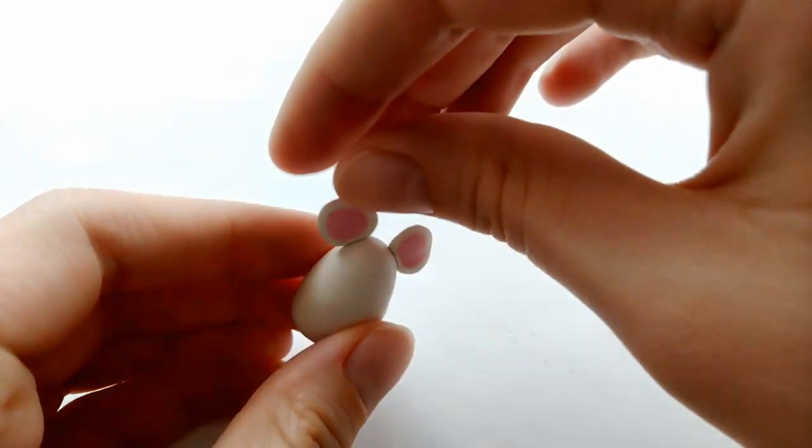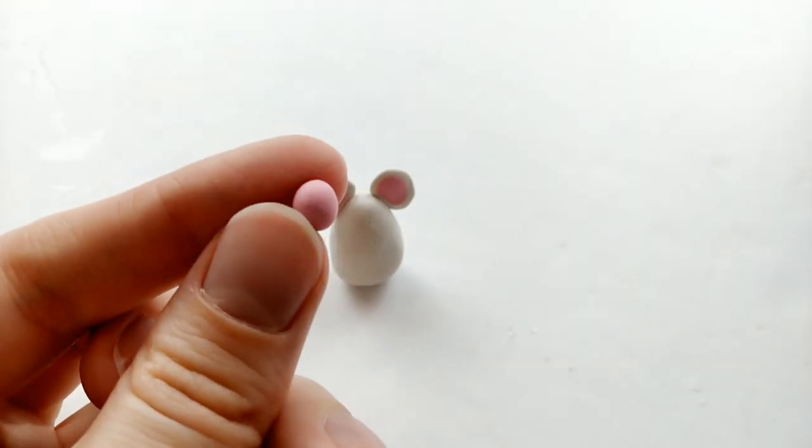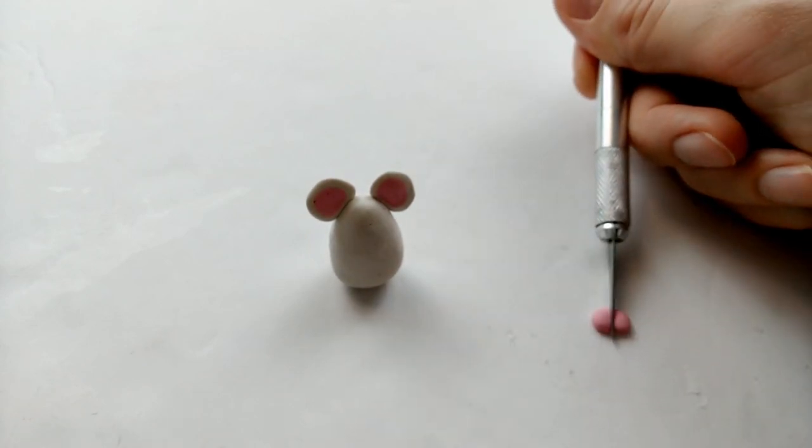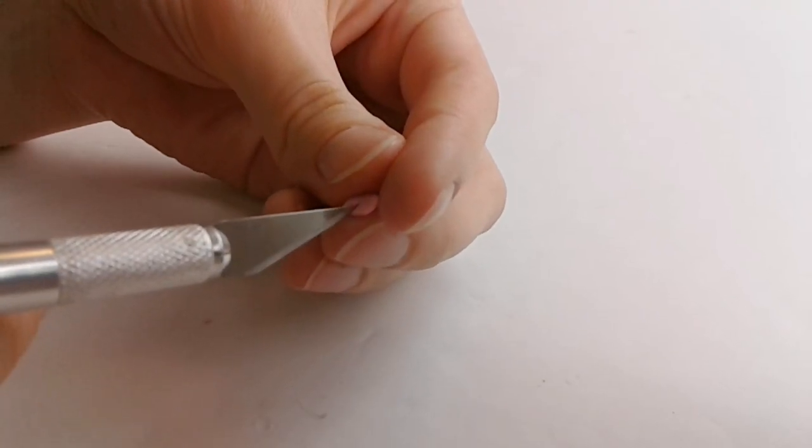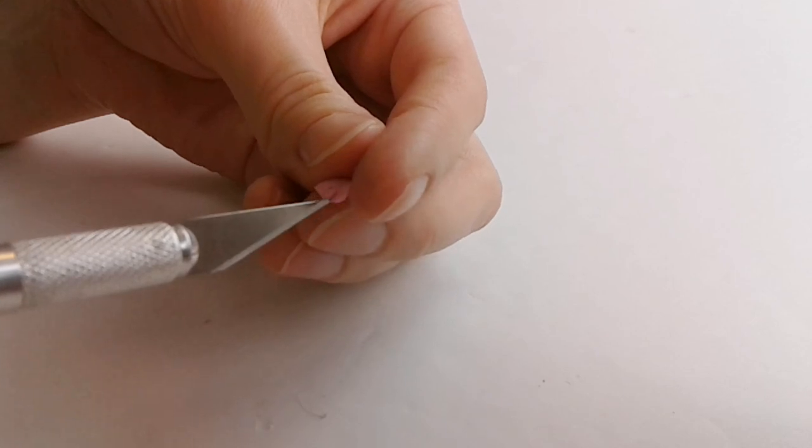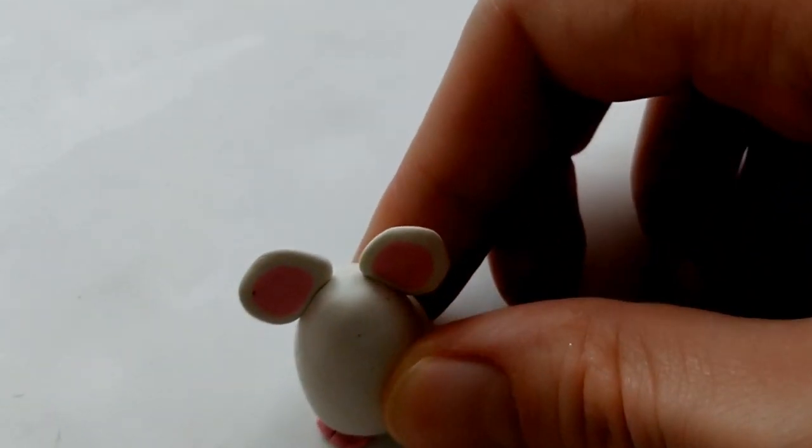Next, take a small pink ball, flatten it out and cut it in half. Then we're going to use our knife and create two little lines and those will be the mouse's feet. And just place the mouse on top of them.